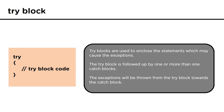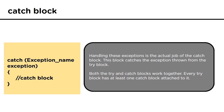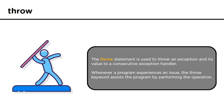Handling the exception is the actual job of the catch block — it catches the exception thrown from the try block. Inside the catch block, a message or some code is written to handle the exception; it can be a message for the user or a default code for a particular condition. Every try block has at least one catch block. The throw keyword is used whenever an exception is encountered — it throws the exception and its value to the consecutive exception handler.